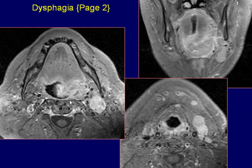Axial post-gadolinium fat-saturated T1-weighted image demonstrates slightly heterogeneous enhancement of the tongue lesion, and enlarged lymph nodes in the carotid space bilaterally.